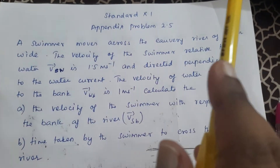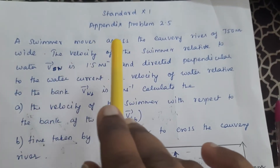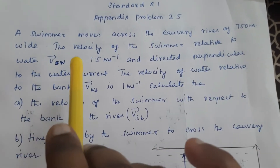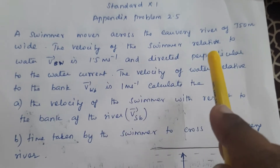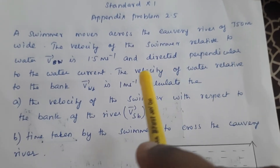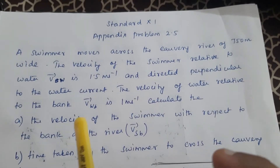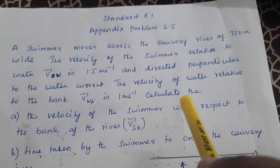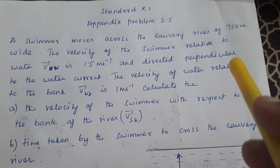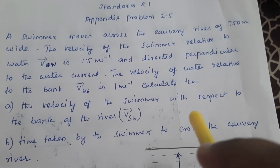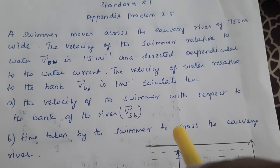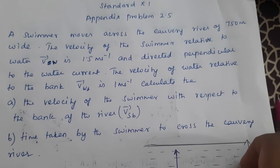Standard 11, Appendix 2.5. A swimmer moves across the Cauvery River, which is 750 meters wide. The velocity of the swimmer relative to water is 1.5 meters per second, directed perpendicular to the water current. The velocity of water relative to the bank is 1 meter per second. Calculate the velocity of the swimmer with respect to the bank of the river and the time taken by the swimmer to cross the Cauvery River.